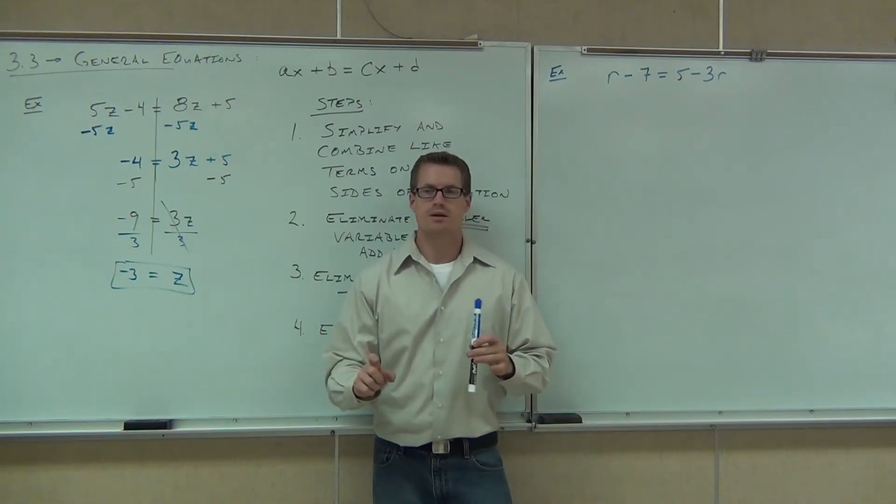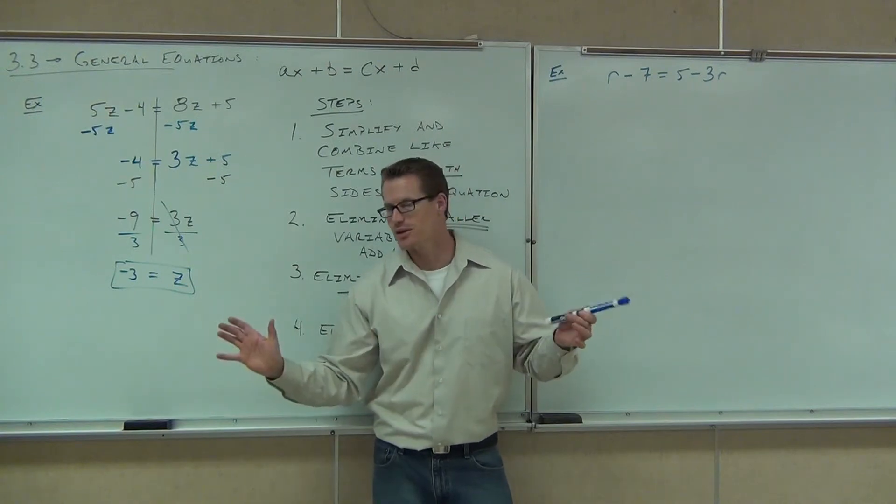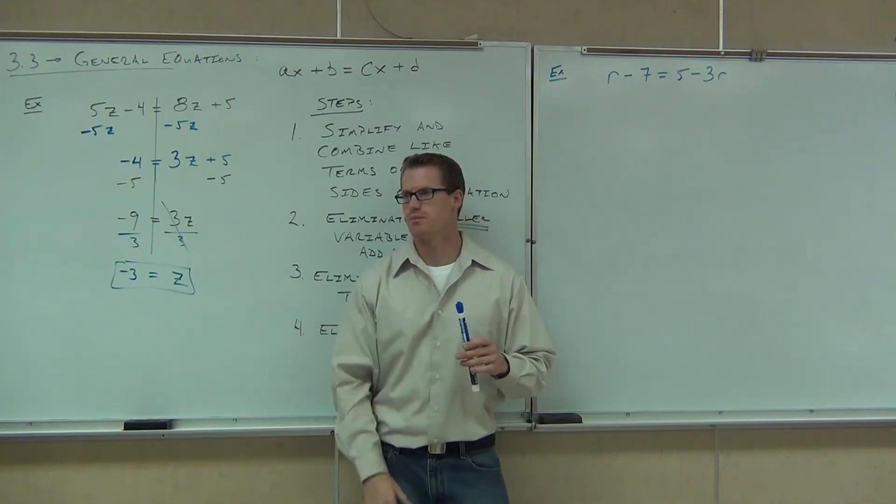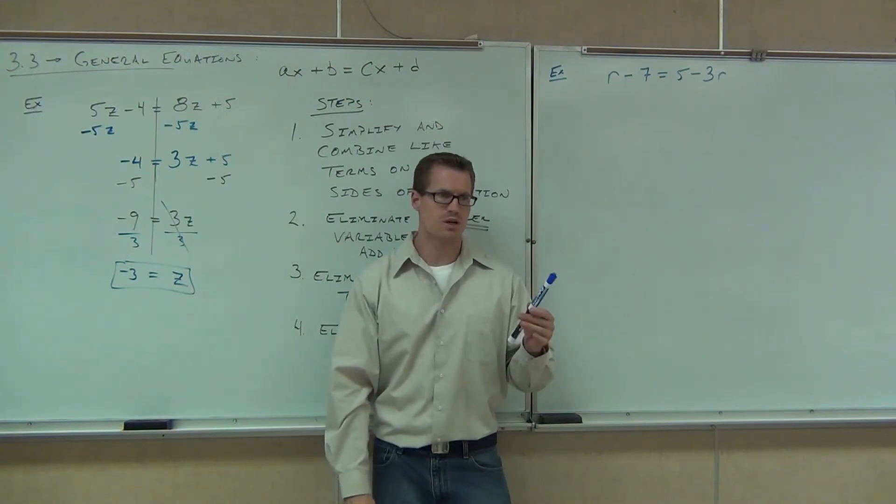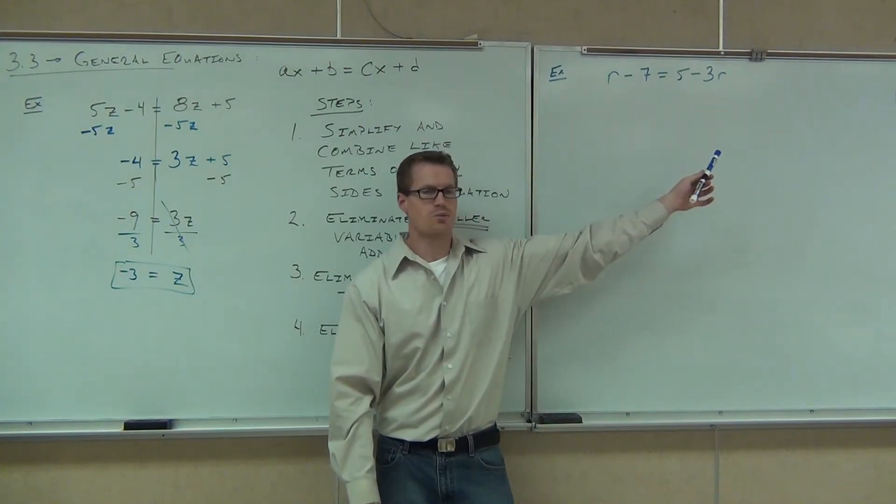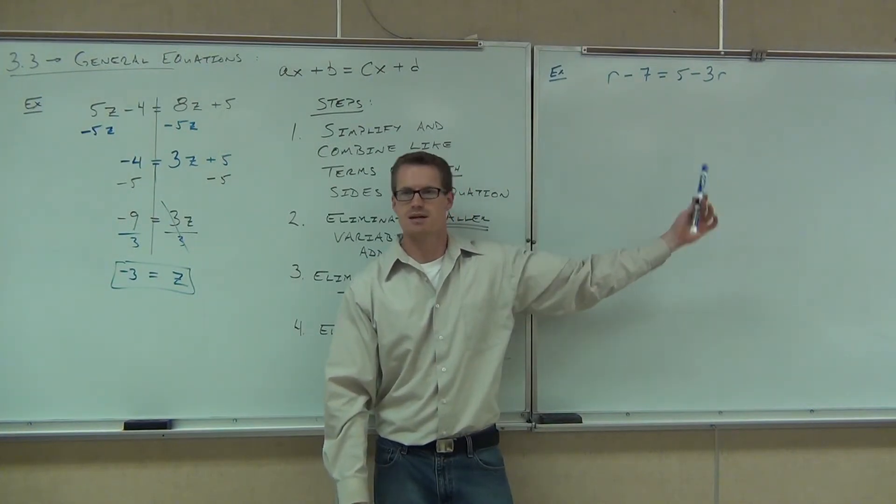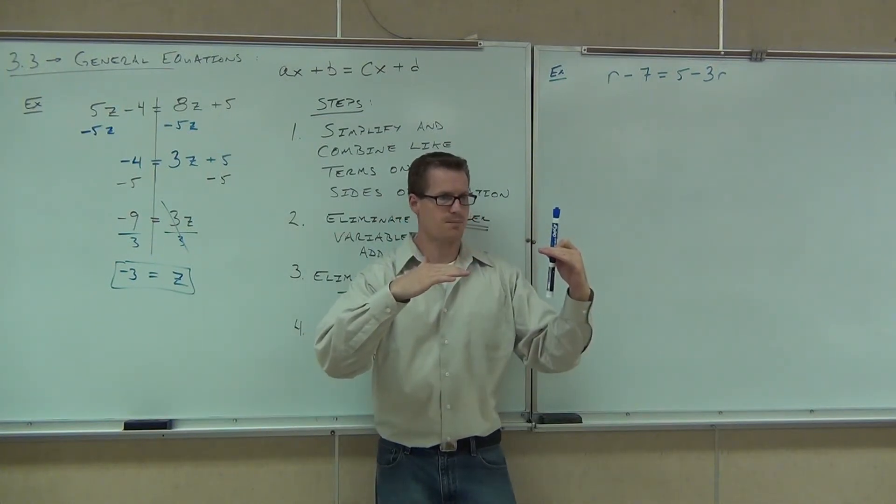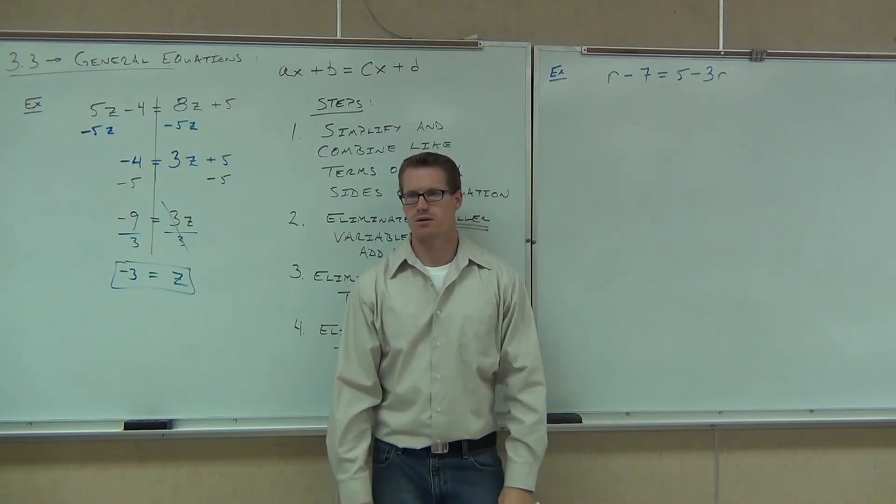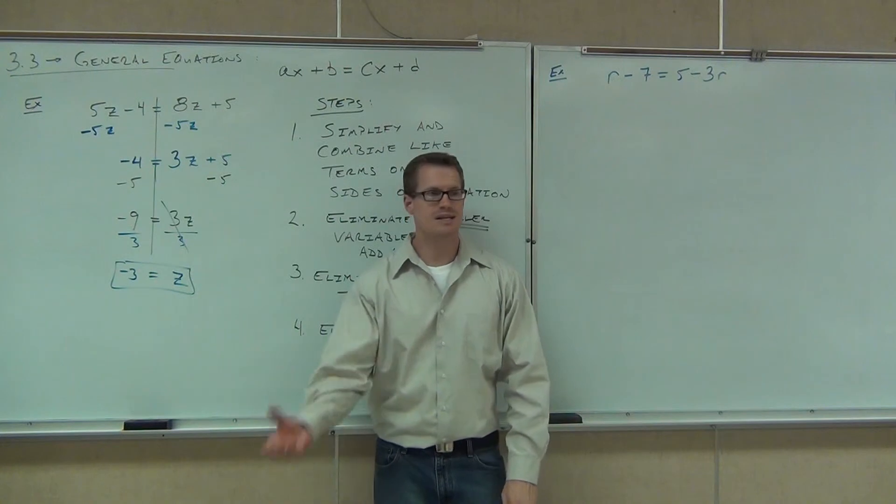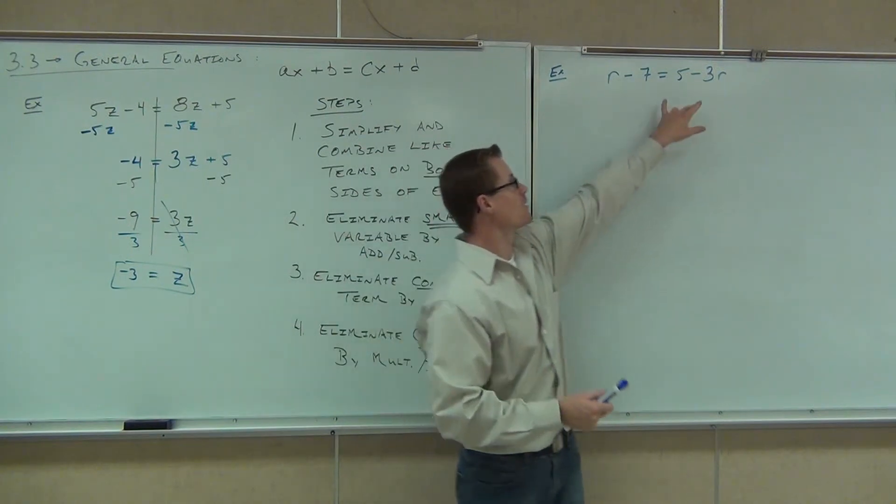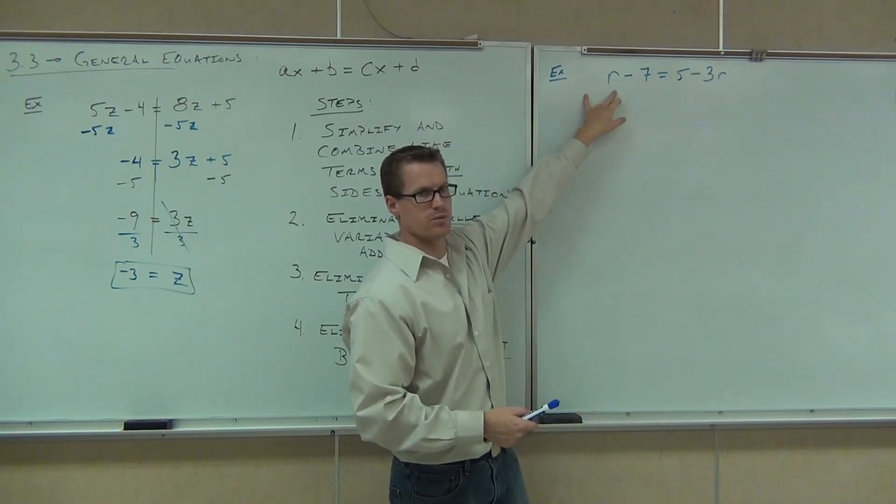My very first step should be to eliminate the smaller variable. Do you guys see the two variables? Before you answer, I want you to notice that variables also contain the sign in front of them. Over here, that's not just 3R, it's negative 3R. We're going to consider that to be negative 3R. Which one's smaller, R or negative 3R? Negative 3R. Definitely negative 3R because that's negative. Negative 3R is smaller than positive 1R.